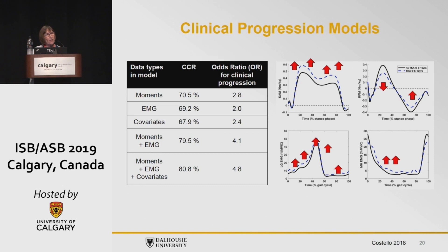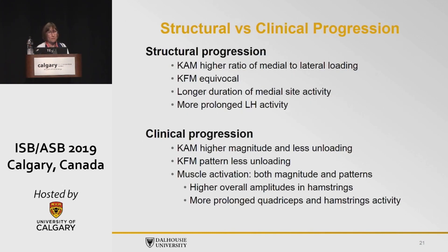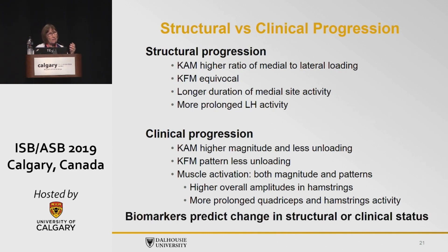Given that many factors go into joint arthroplasty decision-making — in particular the individual's willingness to have the joint replacement — that's not a bad prediction. There are some differences between structural progression and clinical progression as far as the features are concerned. Clinical progression includes the knee adduction moment feature in that prediction, as well as this unloading feature and change in pattern. These are biomarkers that are predictive of changes in structural or clinical status, and they are slightly different, which has implications for treatment.